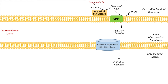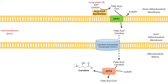Once we have fatty acyl-carnitine within the mitochondrial matrix, it can be acted on by the enzyme CPT2, or carnitine palmitoyl transferase 2. This enzyme takes a CoASH and removes the carnitine portion of fatty acyl-carnitine, then adds a coenzyme A to the fatty acyl chain. So CPT2 is essentially doing what CPT1 does, but in the opposite direction.